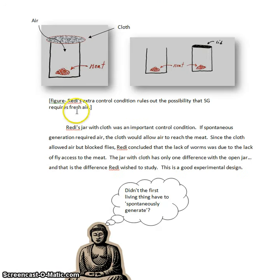In order to rule out the possibility that fresh air was necessary for spontaneous generation, Redi had to include a condition where the jar had a cloth cover that would block flies, but allow air access to the meat. And so we might think of his final experiment as having three conditions.